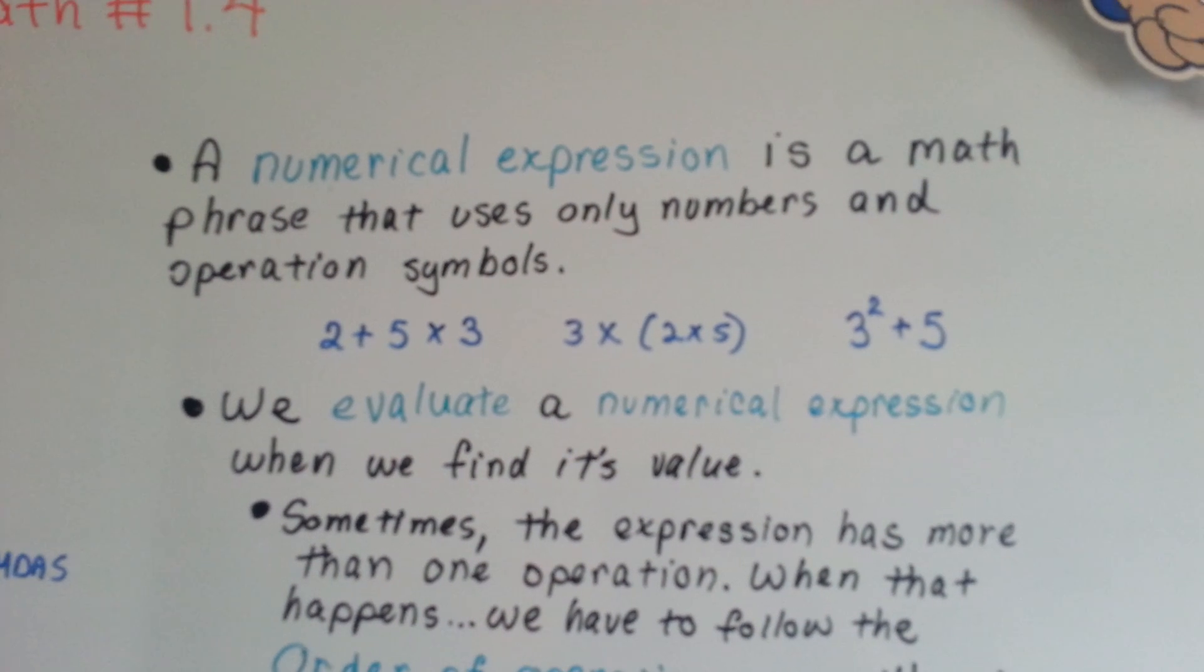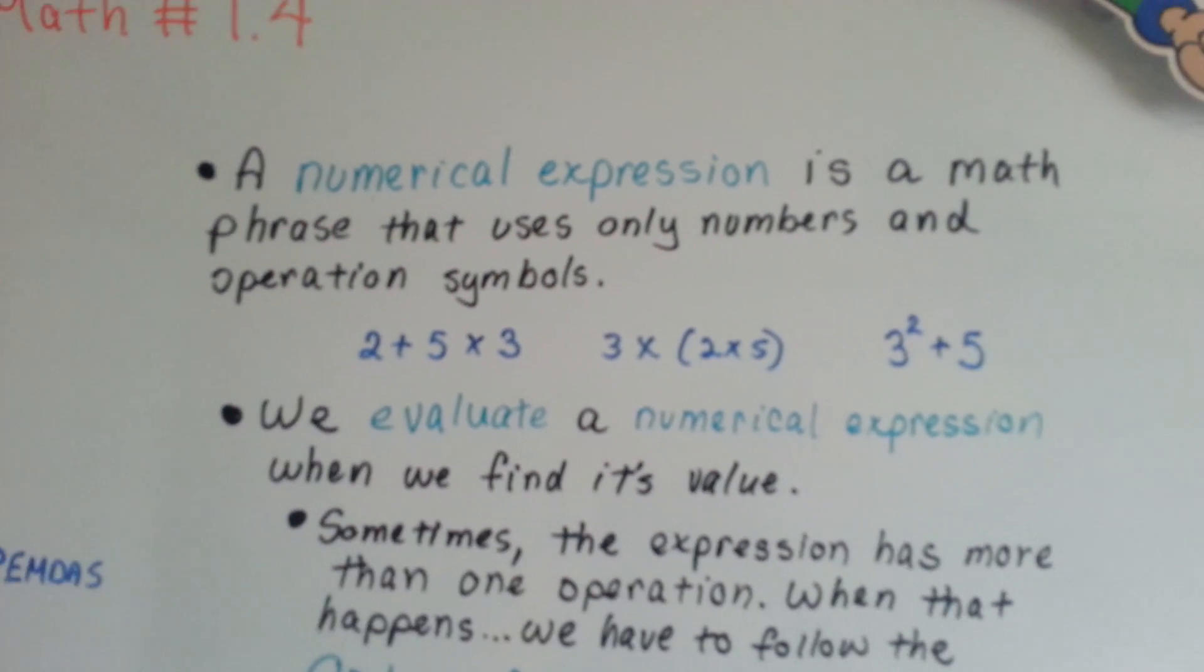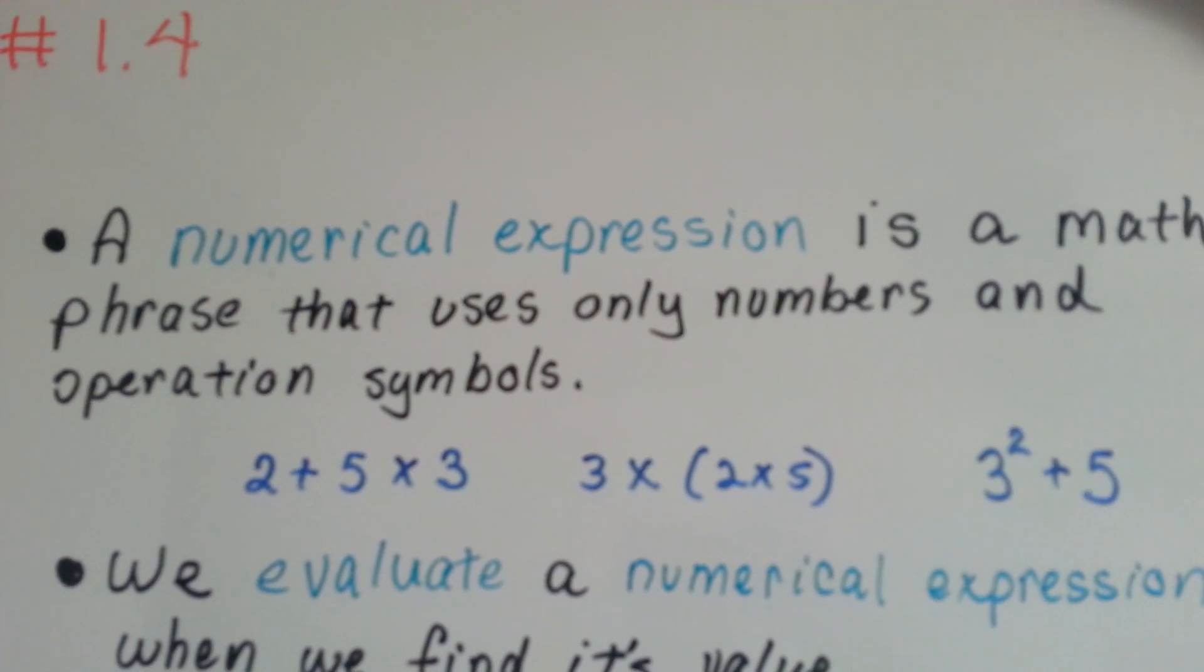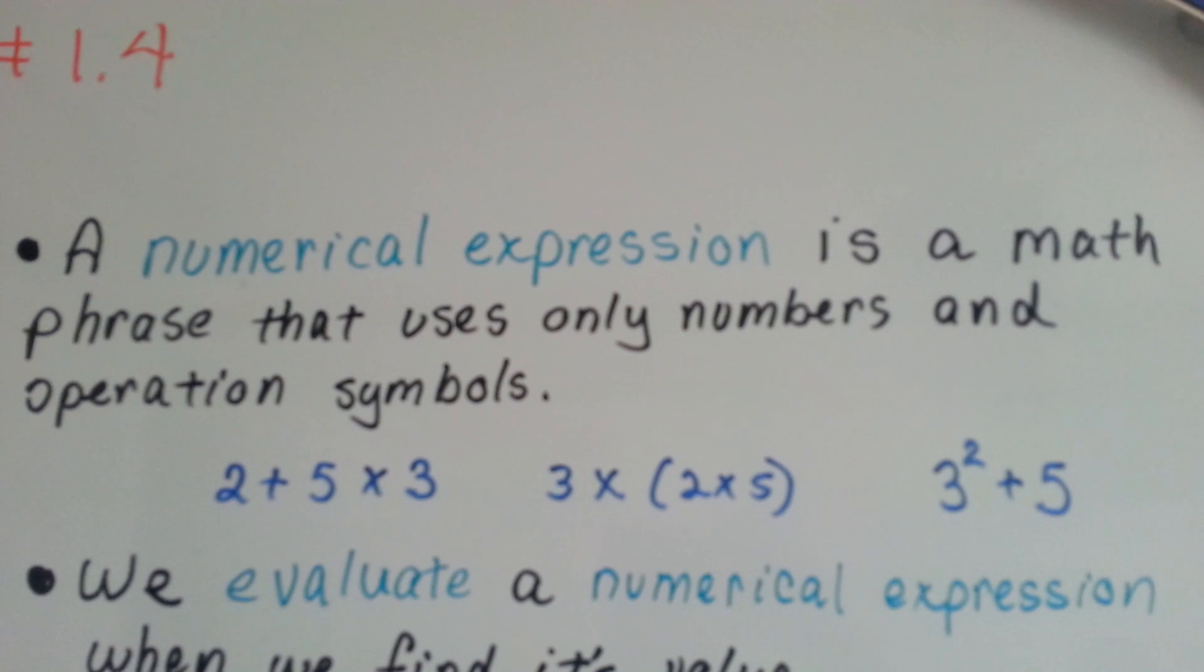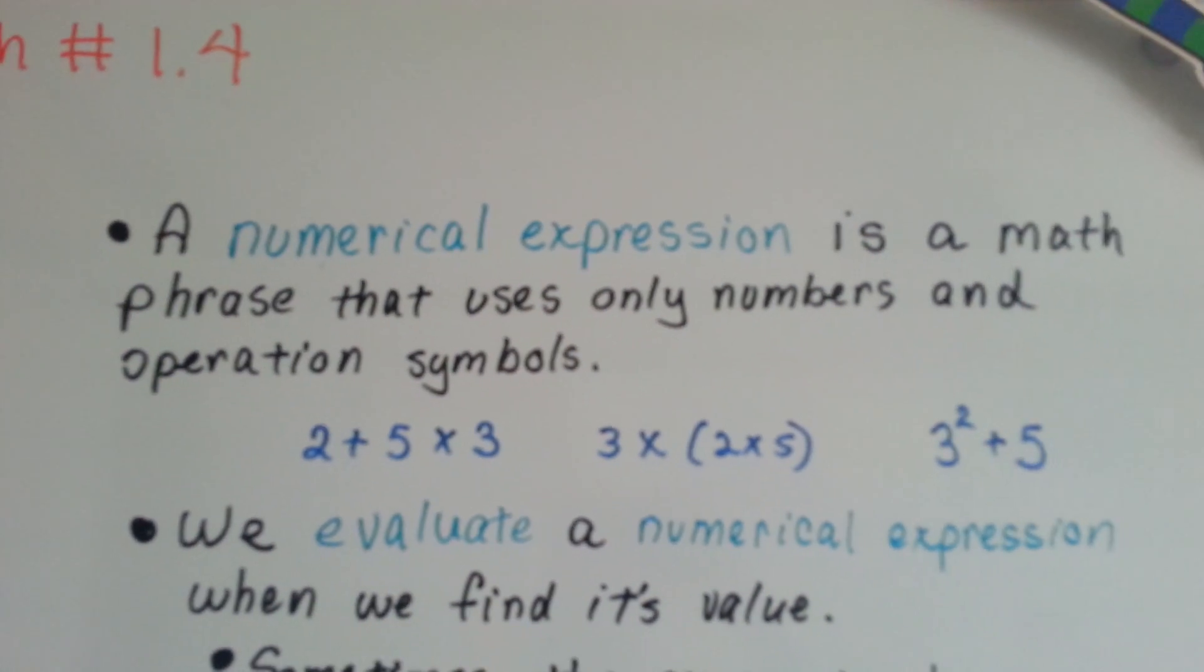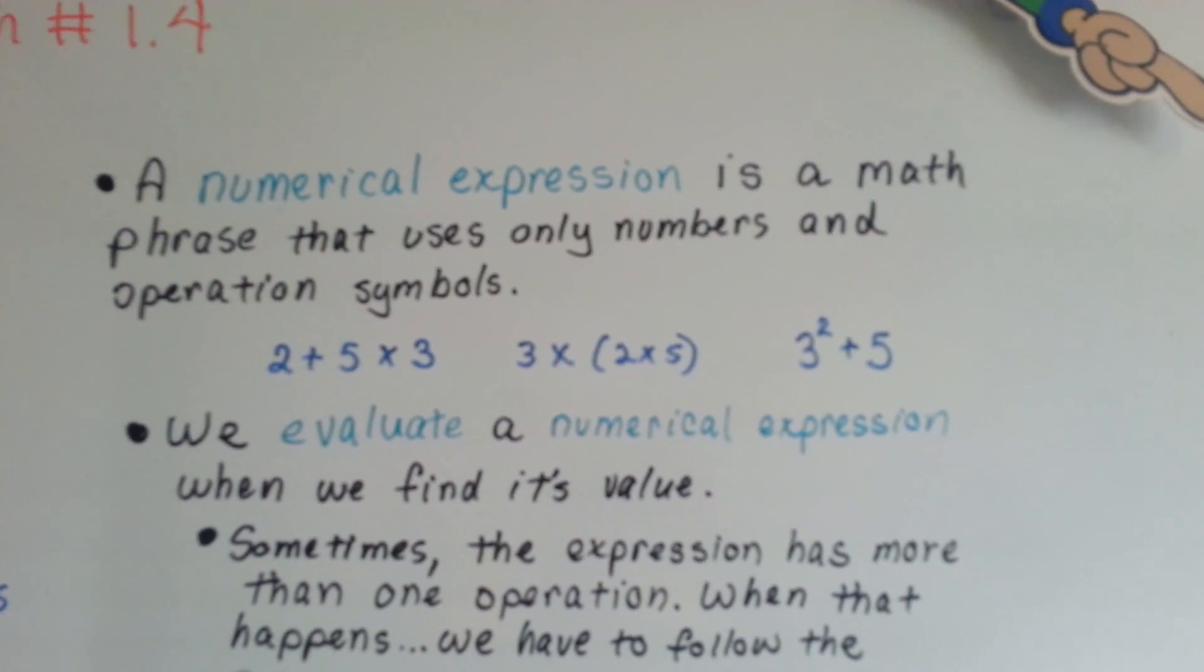So a numerical expression is a math phrase that uses only numbers and operation symbols. These are examples of numerical expressions: 2 times 5 plus 3, 3 times 2 times 5, 3 to the second power plus 5, those are all numerical expressions. See how they've only got numbers and operation symbols?